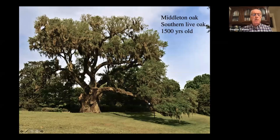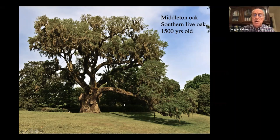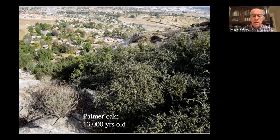The oldest known oak in the country is the Middleton Oak, a southern live oak in Charleston, at 1,500 years old. But recently they found that a Palmer oak in California is 13,000 years old — it's that old because it keeps cloning itself, dying in one section but rooting in another and just keeps going.